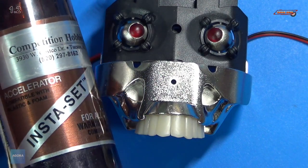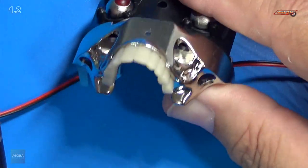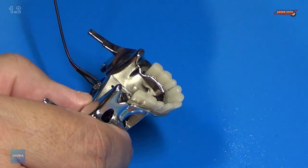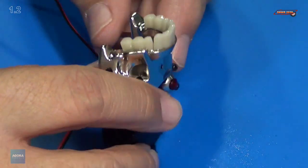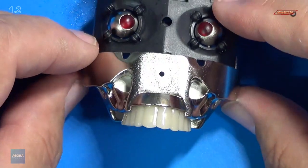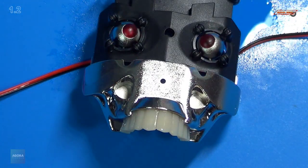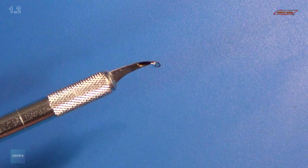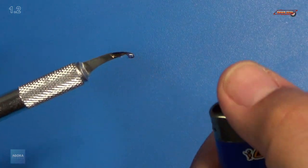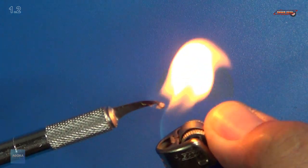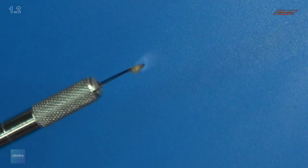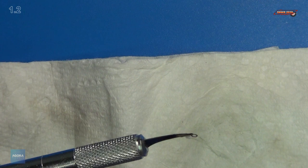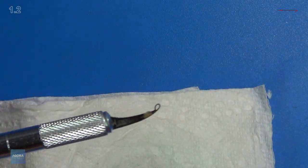I'm going to take some superglue accelerator or what we call a kicker and hit them with some kicker to accelerate the drying time and make them dry faster. There we go. Nice and clean. Looks great. I'm done with superglue, so I'm going to clean it off my looper here. Take a lighter to it and just burn it off. There we go. Nice and clean.